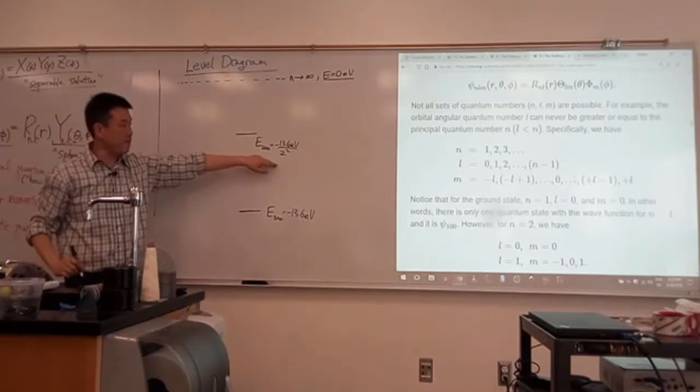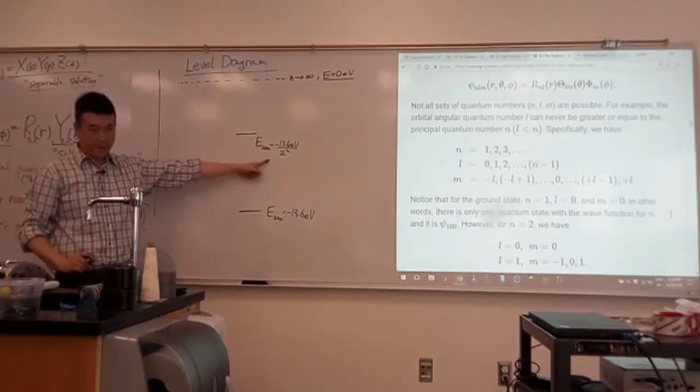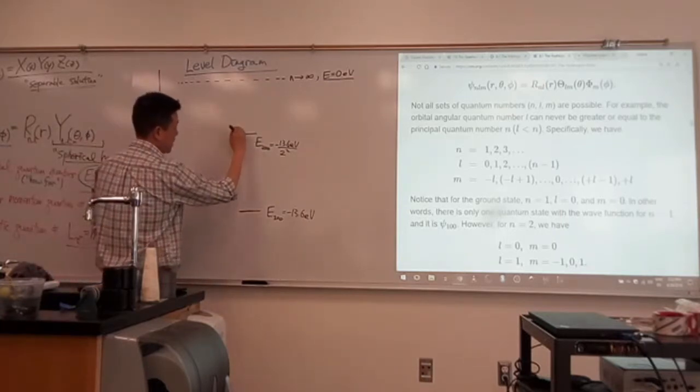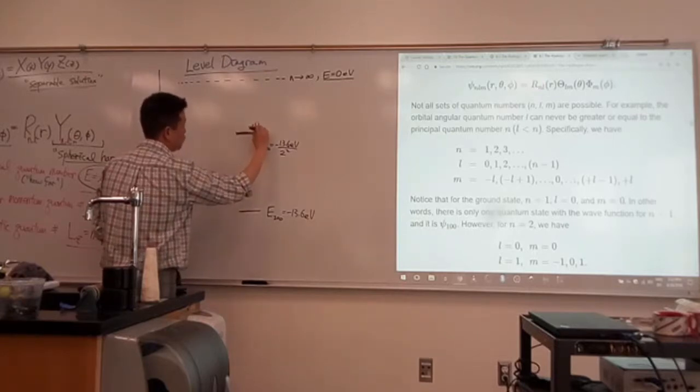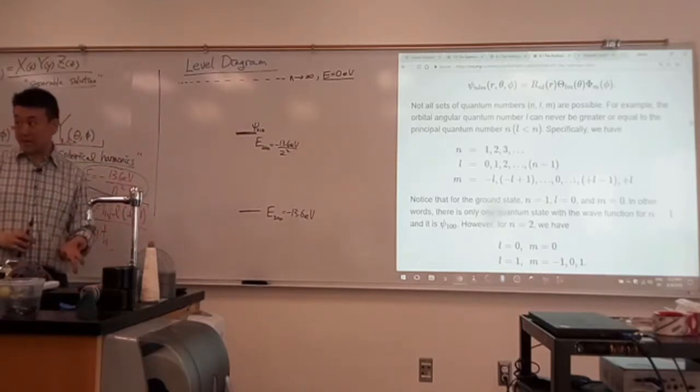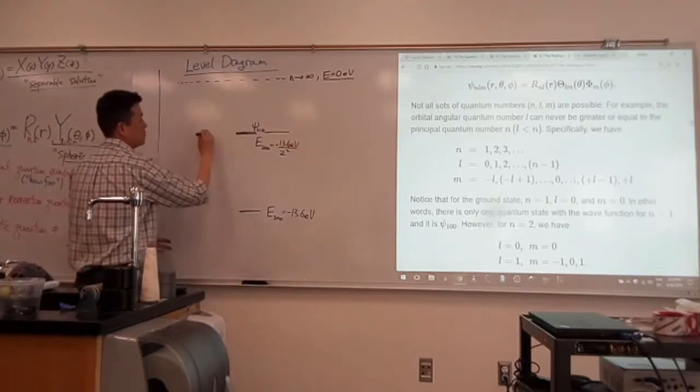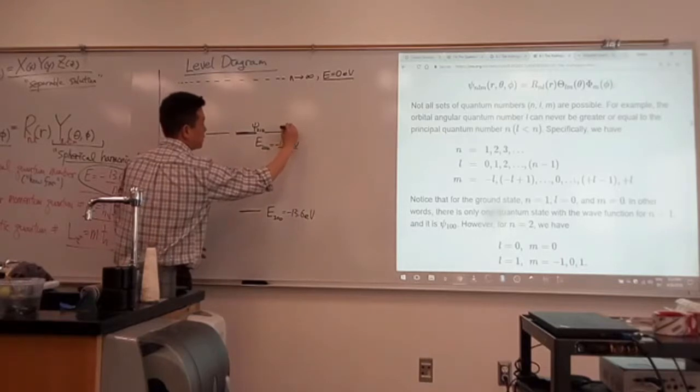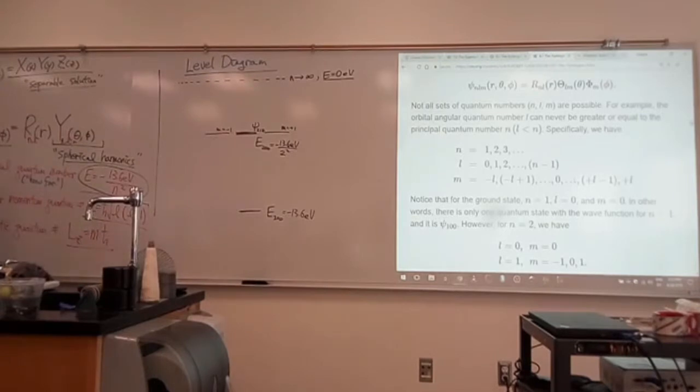And this will be the same value of energy for E2,1,0, 2,1, minus 1, 2,1, plus 1. So, I'm going to draw them all this way, kind of more or less on top of each other. The wave function 2,1,0, zero projection along the axis. And then I'm going to have two different states to the side. This would be where m equals plus 1, m equals minus 1.